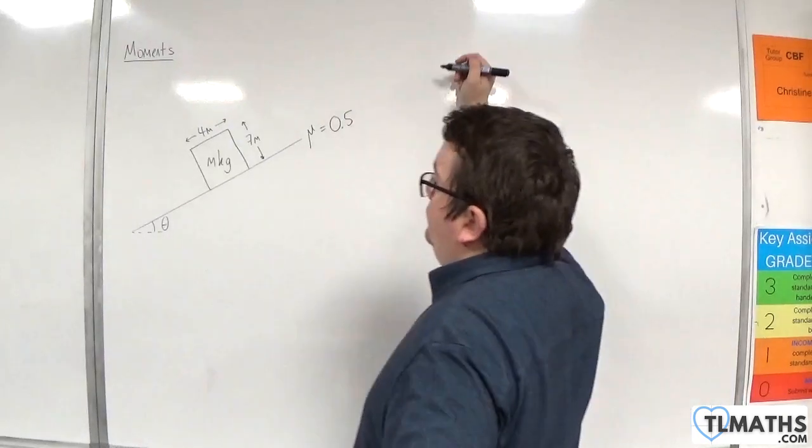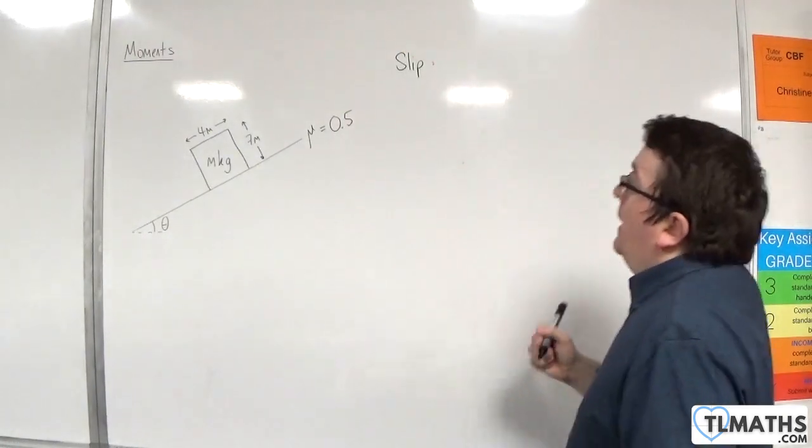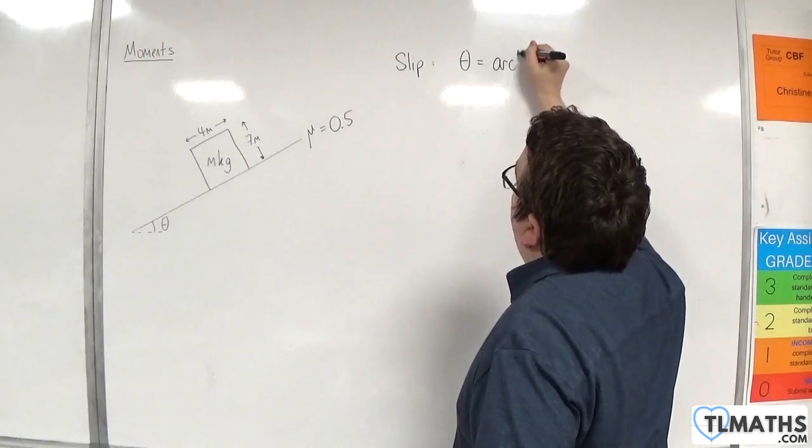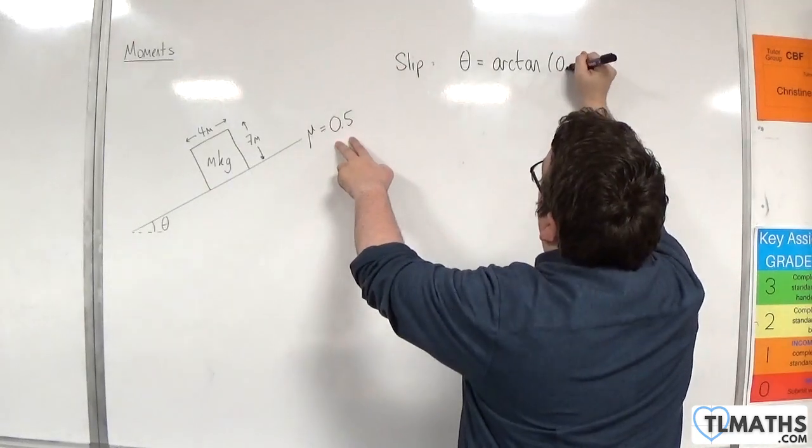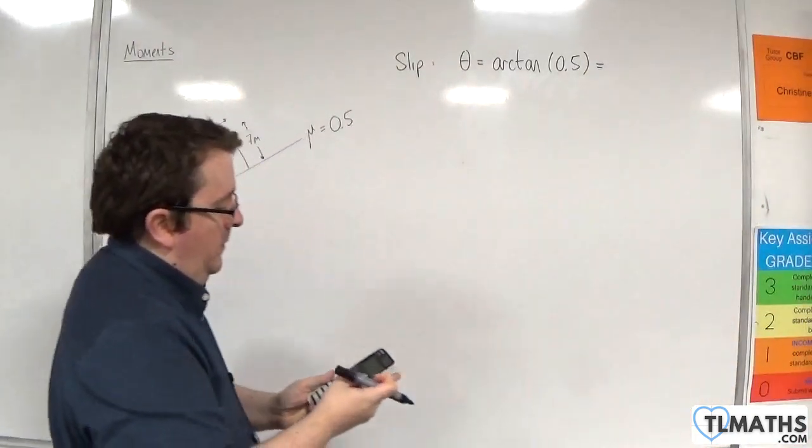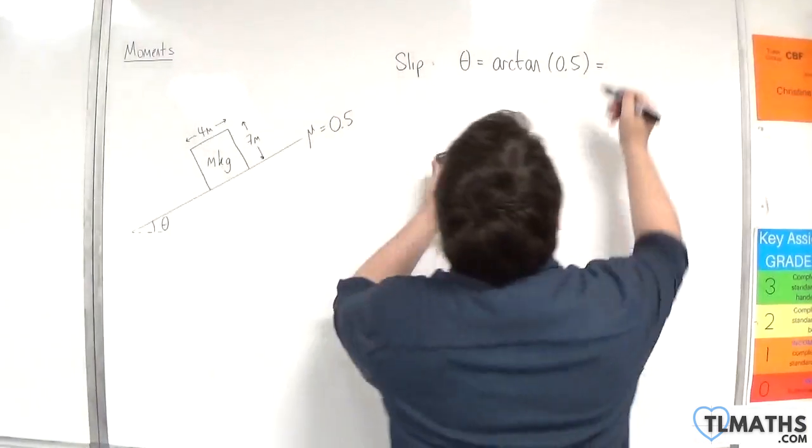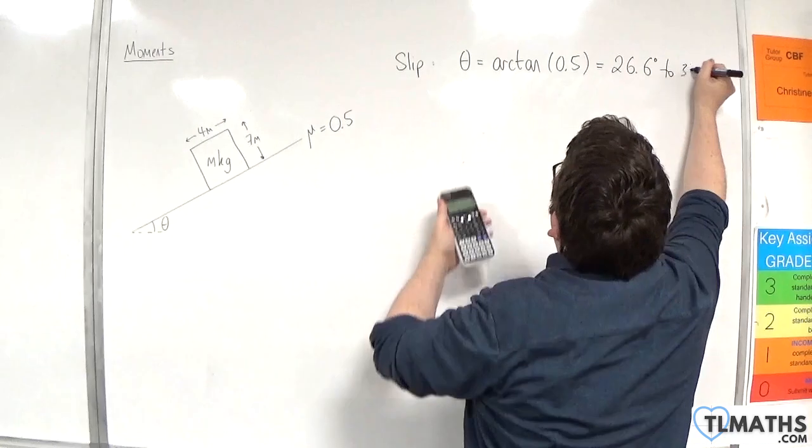Now we can work out if it will slip by looking at the angle theta, which is going to be the arctan of μ, 0.5. So inverse tan of 0.5 is 26.6 degrees to 3 significant figures.